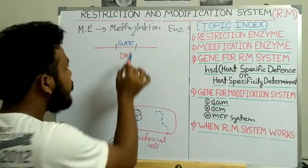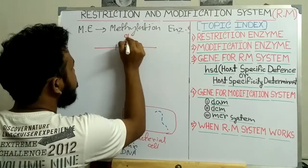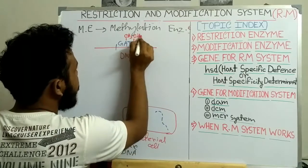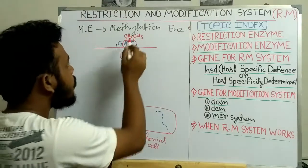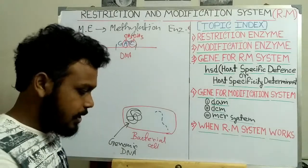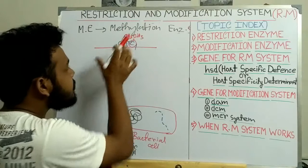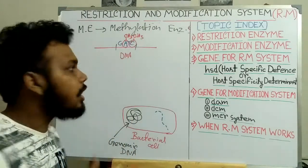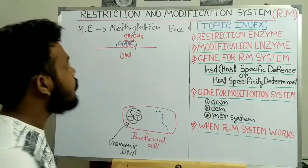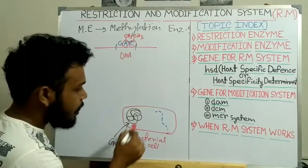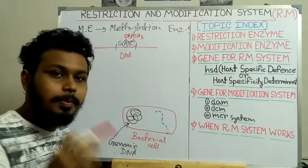The methyl group is added only to the adenine base or the cytosine base — the modification enzyme can either methylate the adenine base or the cytosine base, but not any other base in the DNA strand. In this way the genomic DNA is modified. When the restriction enzyme comes to cut this DNA, it is prevented by this modification and cannot cut the genomic DNA. In the foreign viral DNA, however, no such modification is present, so the restriction enzyme can recognize a particular sequence of 6 to 8 base pairs and cut the foreign DNA at those positions.